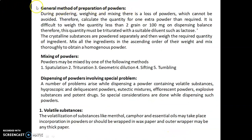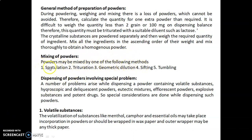General method of preparation of powders: during powdering, weighing, and mixing there is a loss of powder which cannot be avoided. Therefore, calculate the quantity for one extra powder than required. It is difficult to weigh quantities less than 2 grains or 100 mg on a dispensing balance, and since one grain equals 60 mg, such quantities must be triturated with a suitable diluent such as lactose. Crystalline substances are powdered separately; then weigh the required quantity of ingredients and mix in ascending order of weight to obtain a homogeneous powder. Powders may be mixed by spatulation, trituration, geometric dilution, sifting, and tumbling.